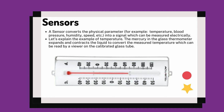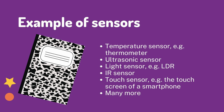Let's explain the example of temperature. We have the mercury thermometer. Inside the thermometer, we have mercury in the glass that expands and contracts the liquid to convert the measured temperature, which can be read by a viewer on the calibrated glass tube.